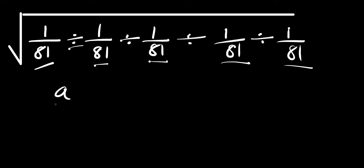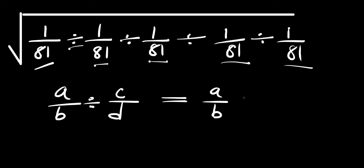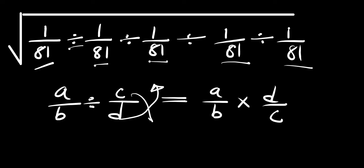If you have a divided by b, divided by c divided by d, we can rewrite this as a divided by b times d divided by c. If you observe well, the d here comes up and the c here comes below. This is the same approach we are going to apply right here.